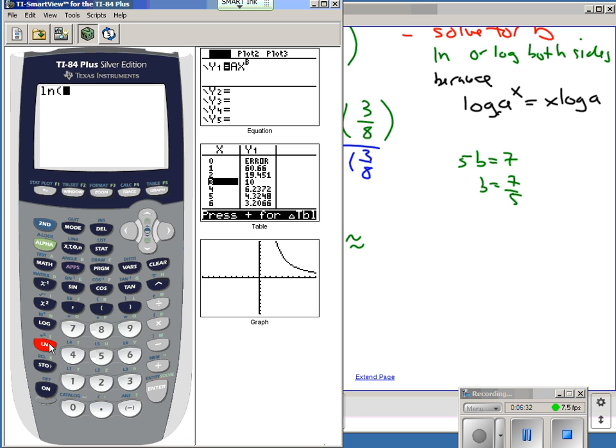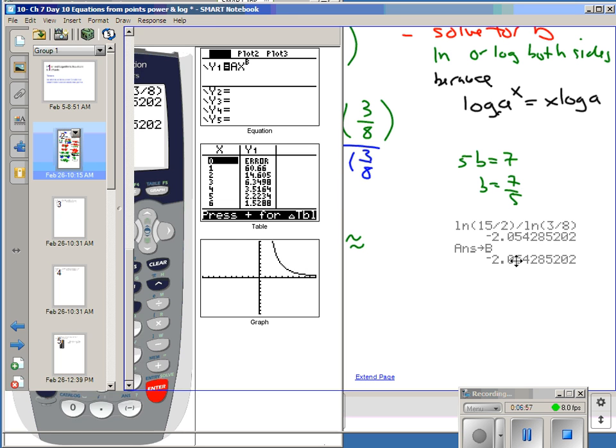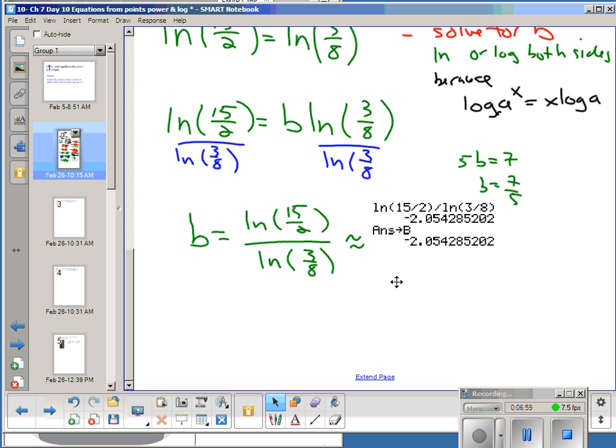So I'm going to clear. I'm going to do Ln of 15 divided by 2, close up my parentheses, divide that by Ln of 3 divided by 8. Boom. Now I'm going to take that. That's my B. I'm going to store that in alpha B. I like to store. Now if I want to call that number up later and use it, I have it. So that right there, that's my answer. About negative 2.05.